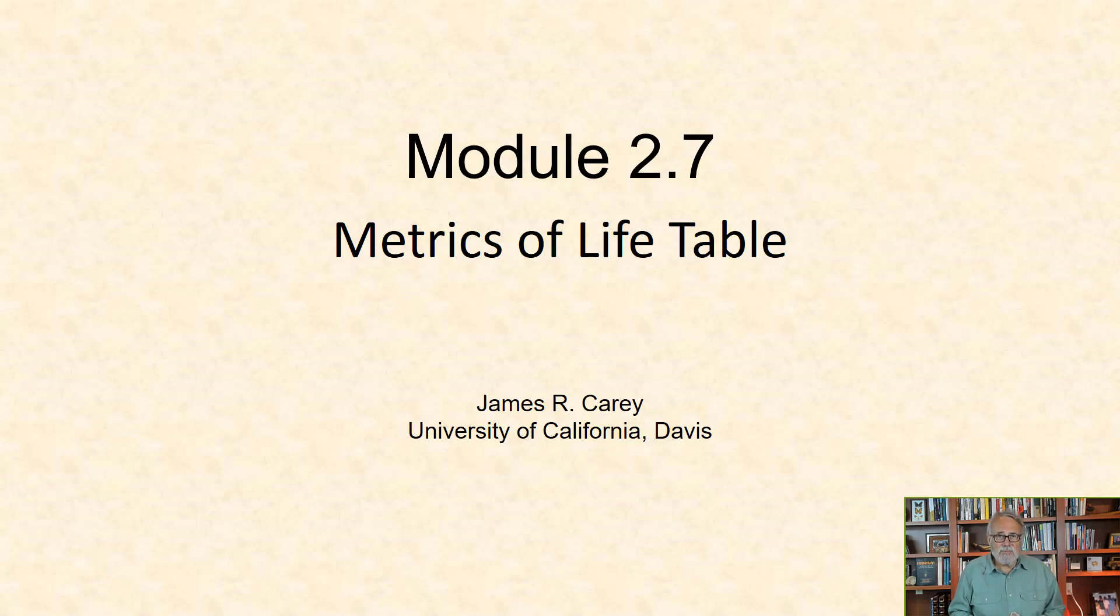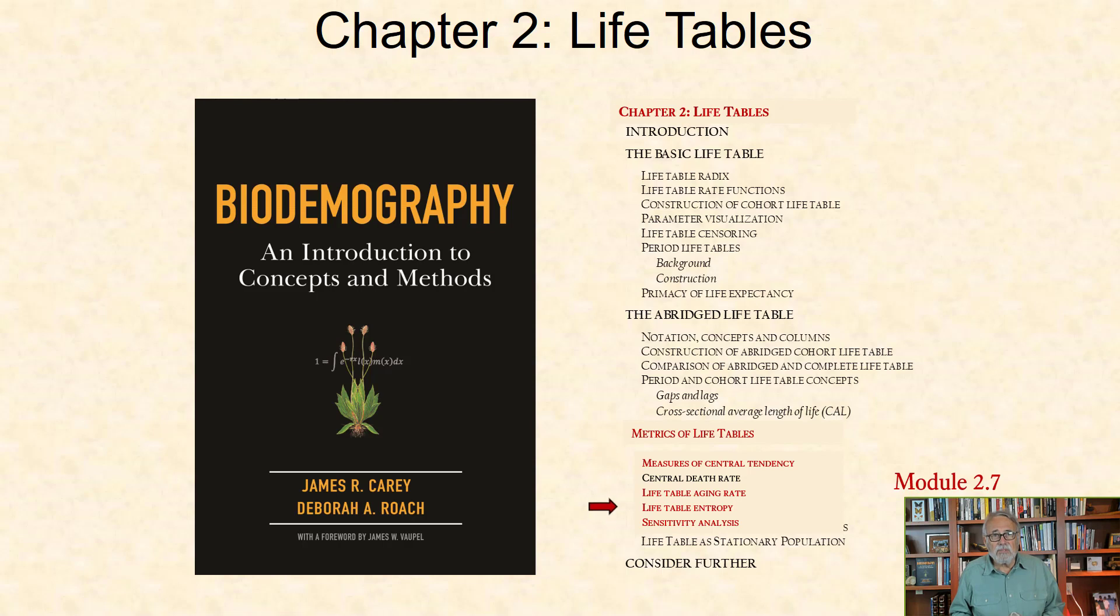In this module of Chapter 2 on Life Tables, Module 2.7, I will list and briefly describe four metrics, or sets of metrics, that are relevant to life table analysis, including measures of central tendency, life table aging rates, life table entropy, and sensitivity of life expectancy to changes in Px.